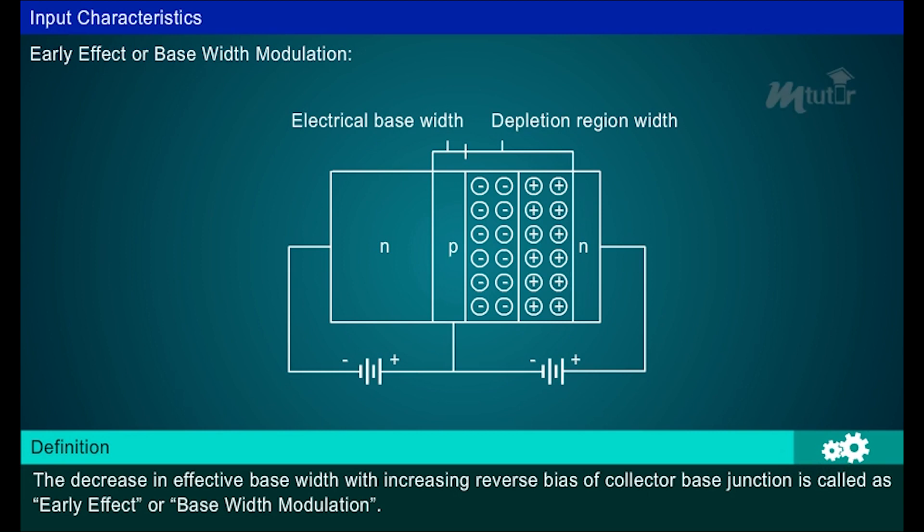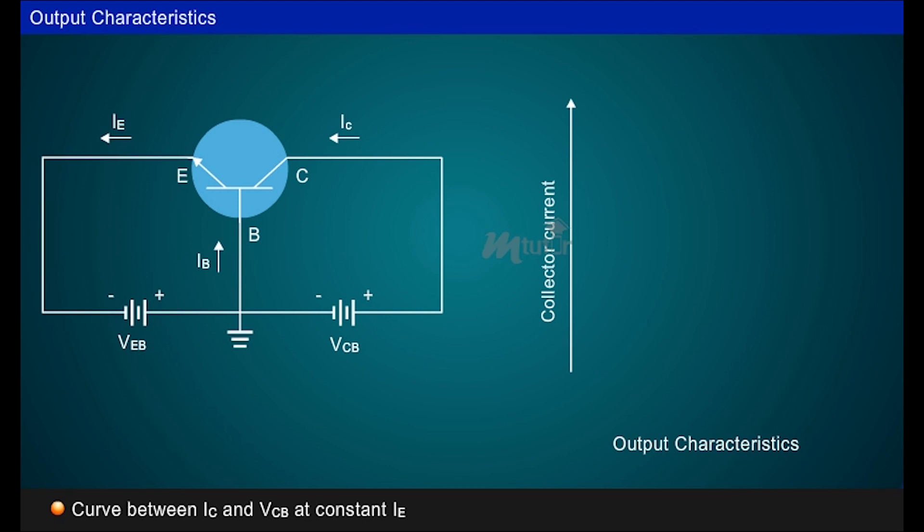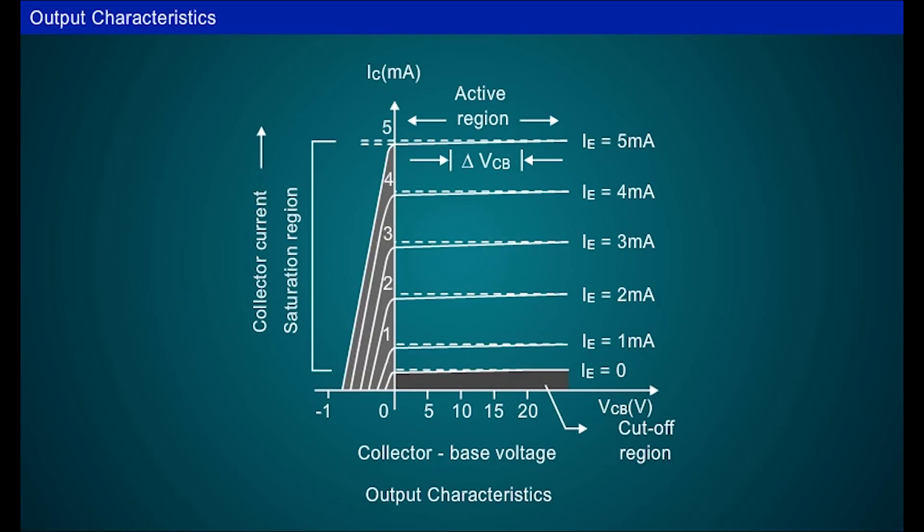It is the curve between collector current IC and collector base voltage VCB at constant emitter current IE. The output characteristics have active, cut-off and saturation regions.